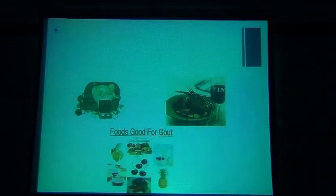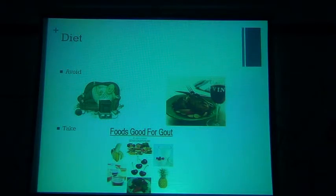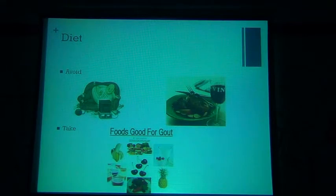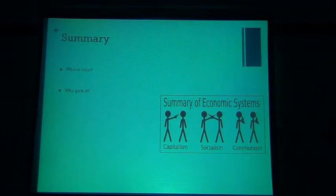Regarding diet, everyone knows we have to avoid a sedentary lifestyle and excess meat and wine. Take plenty of vegetables. There is debate about purine-rich vegetables like tomatoes, but it has been clearly shown that vegetables do not contain enough purine to warrant restriction, so we do not need to advise restriction of protein or purine from vegetable sources.